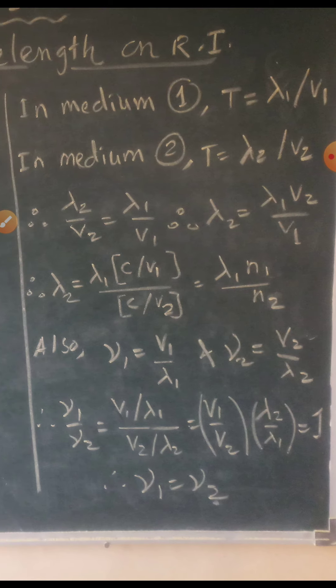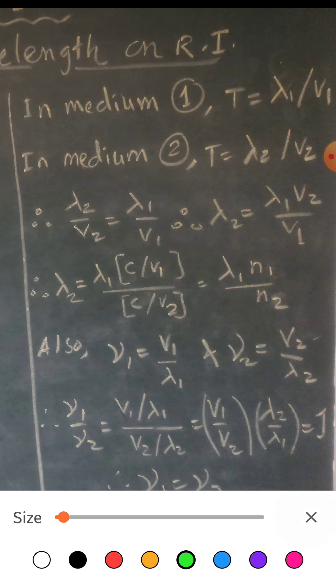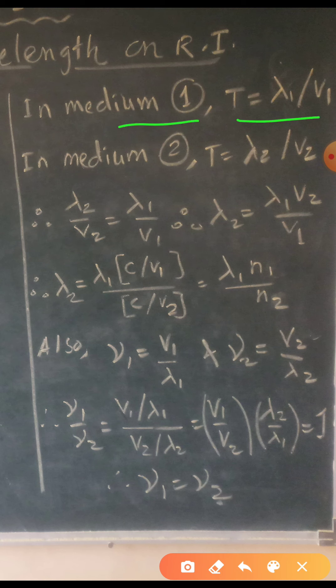Hence, observe this part. In medium number 1, T is equal to lambda 1 upon V1. Remember the formula: velocity is equal to distance upon time. Hence, time is equal to distance upon velocity. In capital T, lambda 1 will be the distance covered with velocity V1. Similarly, in medium 2, during the same time, the distance travelled is lambda 2 with velocity V2. Hence, T is equal to lambda 2 upon V2.